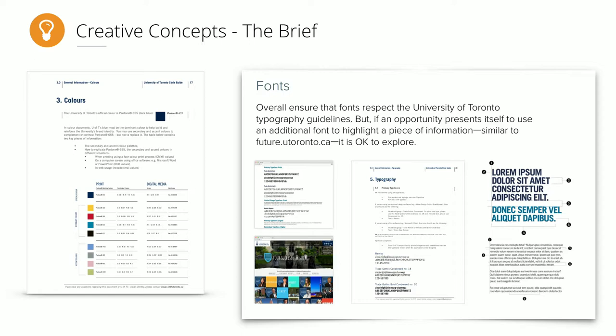By narrowing down typography and font options, we focus our creative exploration on layout and imagery. This also sets the stage so that when creatives show up and someone says 'I like a script font,' we can say we all agreed in the previous meeting on this direction for typography. We take the results of that first meeting and write them up in a document called a creative brief, send it around, and get approval before we proceed.